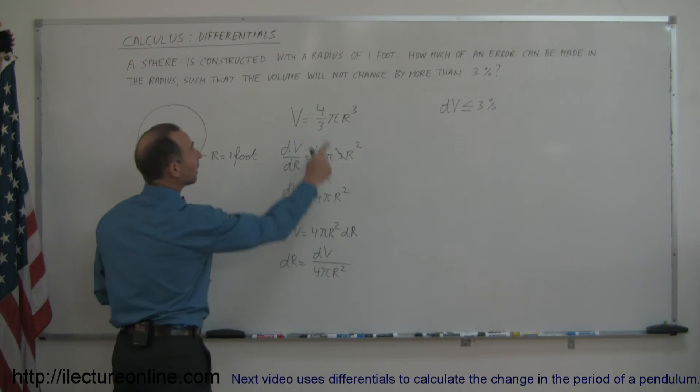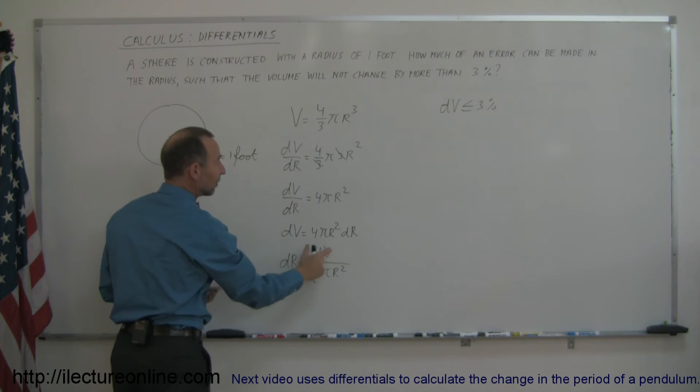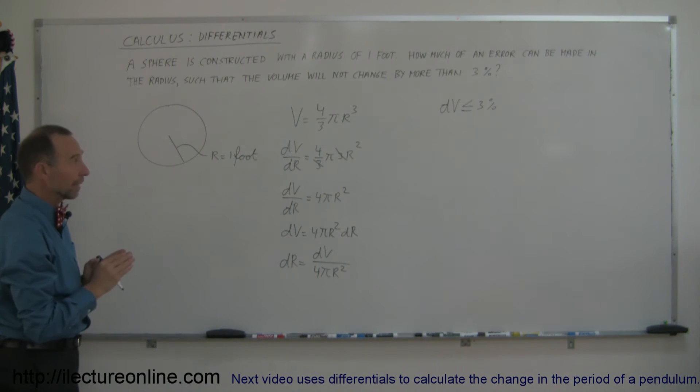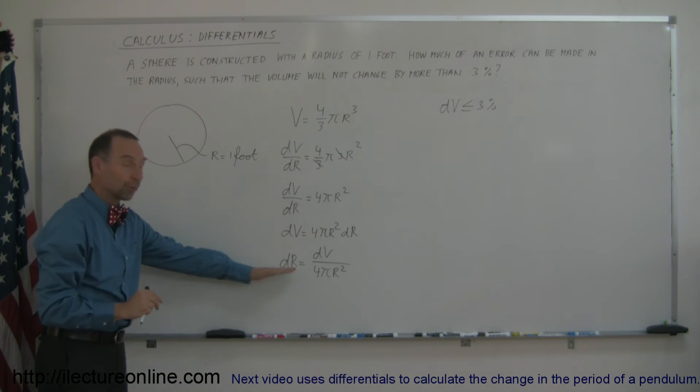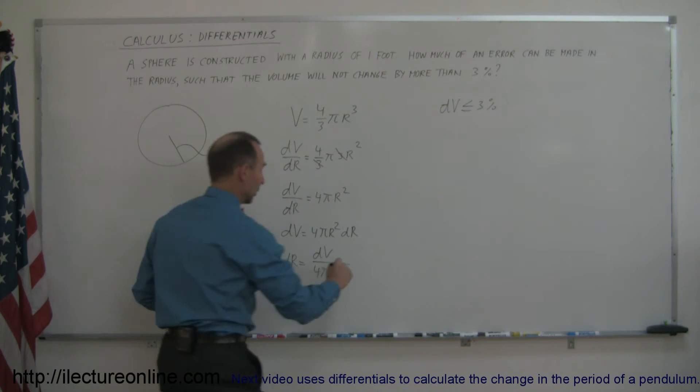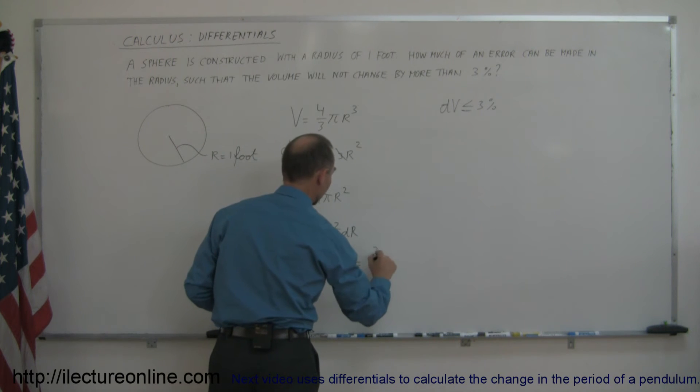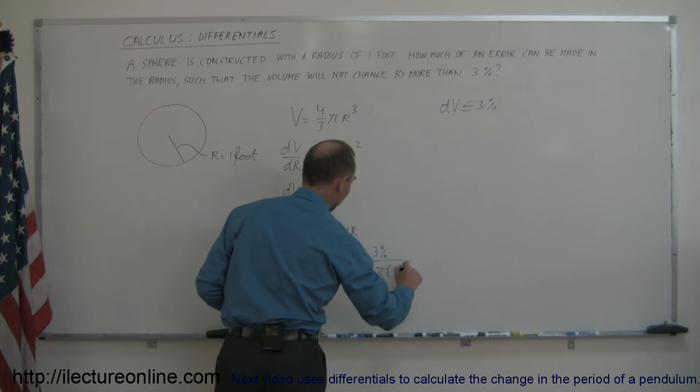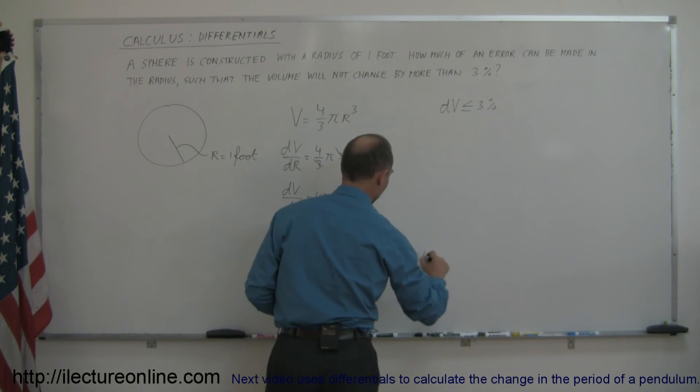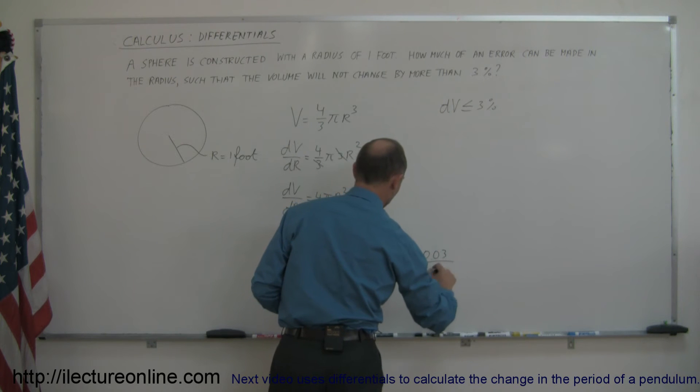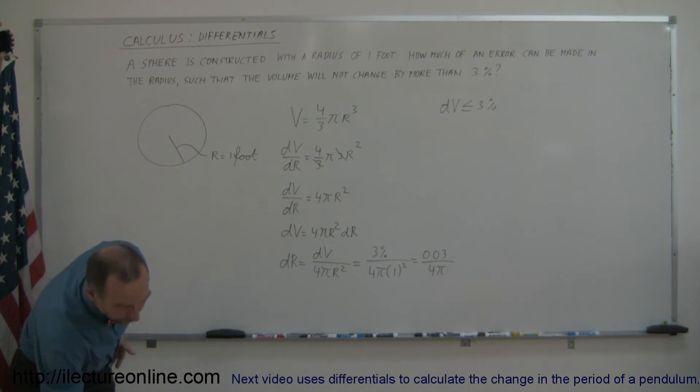r is 1 foot, dv is the allowable change or the allowable error of 3%, and we're looking for dr. So dv is 3% divided by 4 pi times 1 squared, and of course 3% is 0.03 divided by 4 pi, and 1 squared is simply 1.